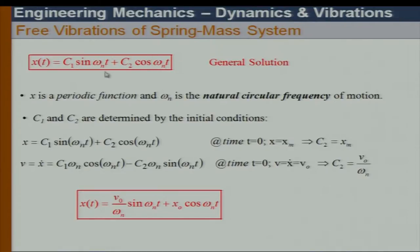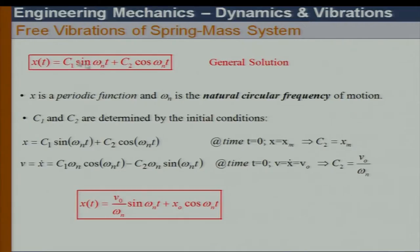Now I apply the initial conditions. At time t = 0, x equals x_m and velocity equals V₀, so x dot equals V₀ at t = 0. Once I apply the initial conditions, I can solve the problem based on the initial displacement x₀ and initial velocity V₀. Note there is a small misprint — this should be C₁ and x₀.